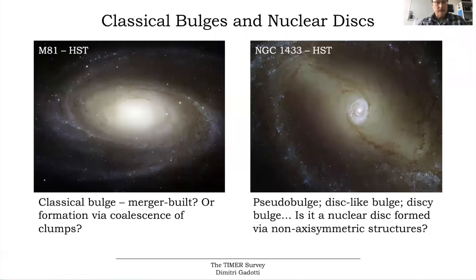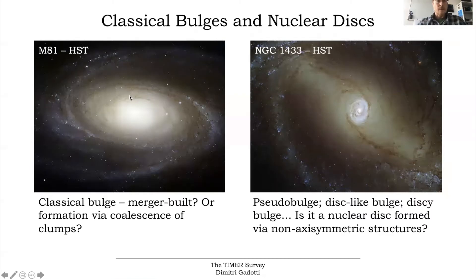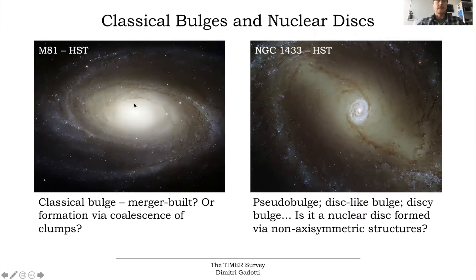The TIMER survey is a survey about the central region of nearby galaxies. When one thinks about these galaxies, the classical picture is something like what I show here on the left, which is an image of M81. You have a main galaxy disk and at the center of the disk you have a smooth spheroidal stellar component that is dispersion dominated, supported dynamically by the velocity dispersion of stars. This is the classical picture of the bulge, but it turns out that most galaxies in the universe actually have a bar, and bars are expected to induce a number of fascinating phenomena.